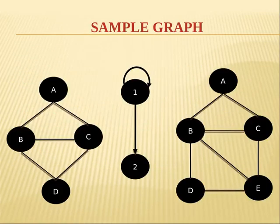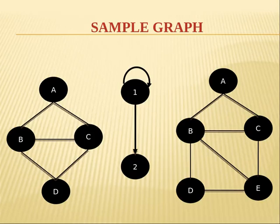Here I have given examples of some sample graphs. These are all called nodes or vertices, and this is called an edge, which doesn't have any weight. I have given an example of a self-edge — one node having an edge connecting to itself, the same vertex. And here there is an arrow indicating direction, so this is called a directed graph. We will see the different types shortly.